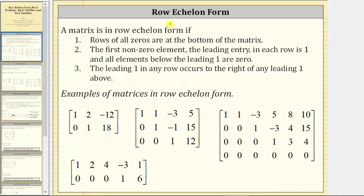Let's first define row echelon form of a matrix. Below we have four examples of matrices in row echelon form which we will compare against the definition. A matrix is in row echelon form if: number one, rows of all zeros are at the bottom of the matrix. Number two, the first non-zero element — called the leading entry — in each row is one, and all elements below the leading one are zero.